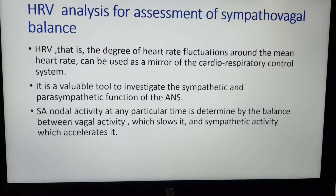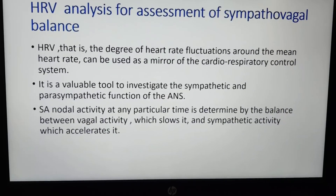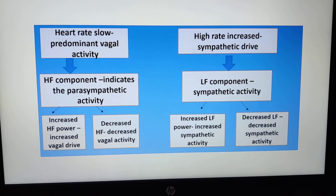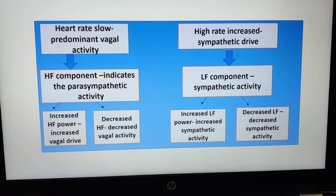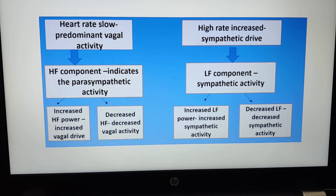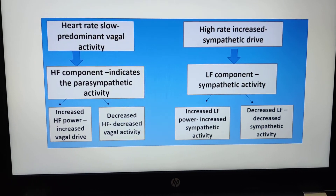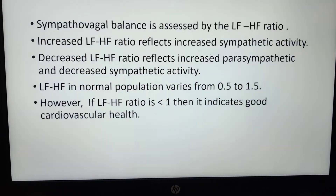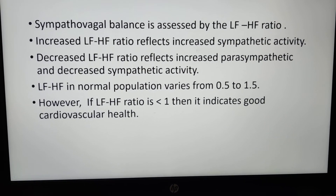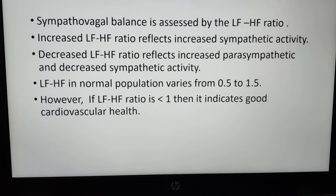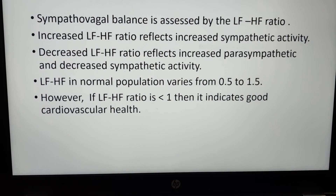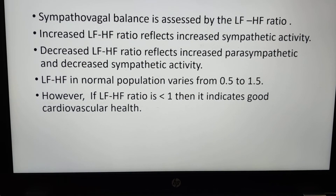For assessment of sympathovagal balance, HRV analysis is very important. Heart rate slows with predominant vagal activity, and heart rate increases with sympathetic drive, so the HF component reflects parasympathetic activity and LF reflects sympathetic activity. The normal range of the LF/HF ratio in the population is 0.5 to 1.5, and if the LF/HF ratio is less than 1, it indicates good cardiovascular health.